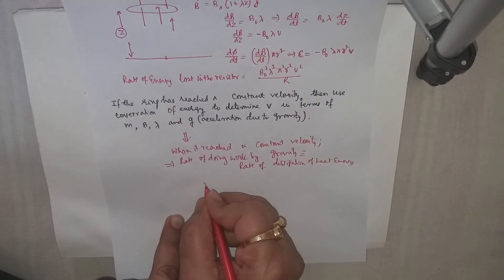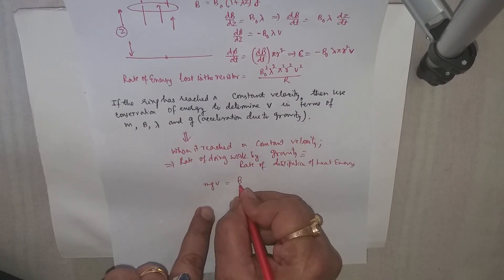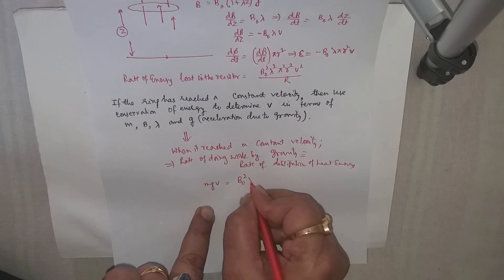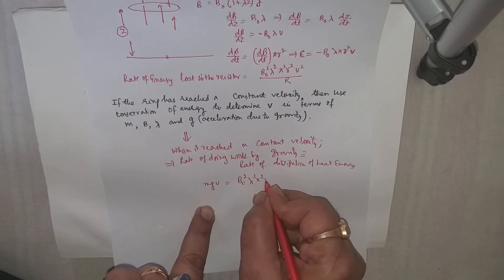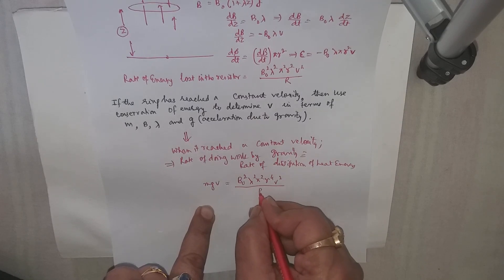That means mgv, that is the rate of doing work by gravity, and this will be equal to B₀²λ²π²r⁴v²/r.